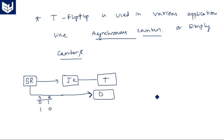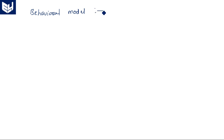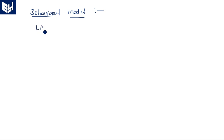Now we are going to see the behavioral style VHDL code for the T flip-flop — the behavioral model. For any VHDL code it should start with two lines: one is library IEEE, and its packages. Without these two lines the program will not work, so we must include them.